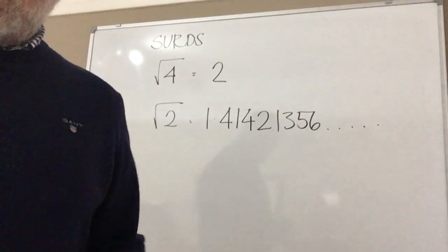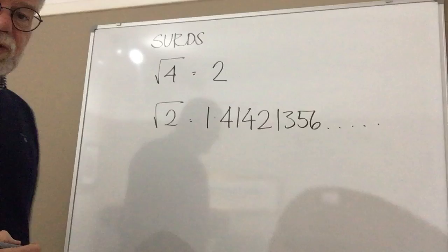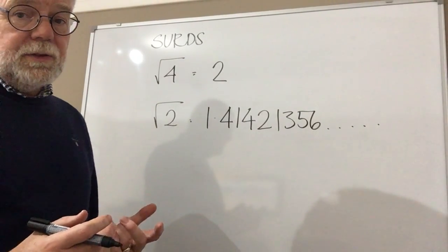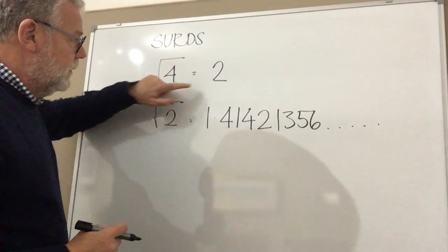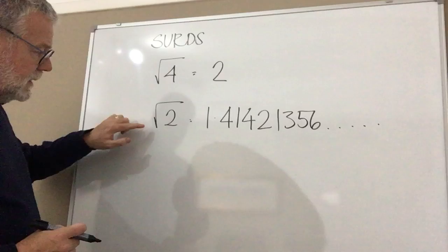In this clip we're going to have a look at surds. Now very briefly, what is a surd? Well, I think the best way of explaining it is through an example. So if I said to you what's the square root of 4, you'd tell me the answer is 2.